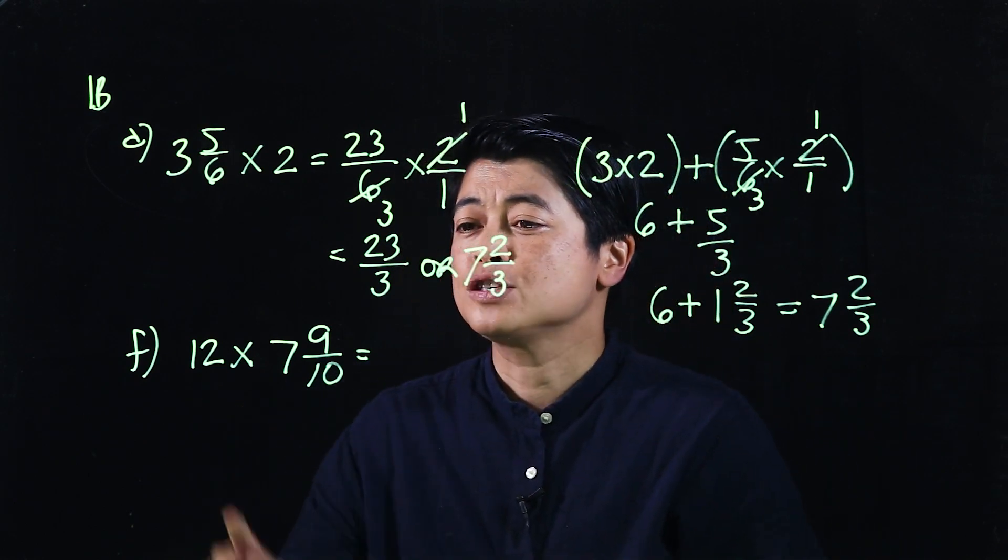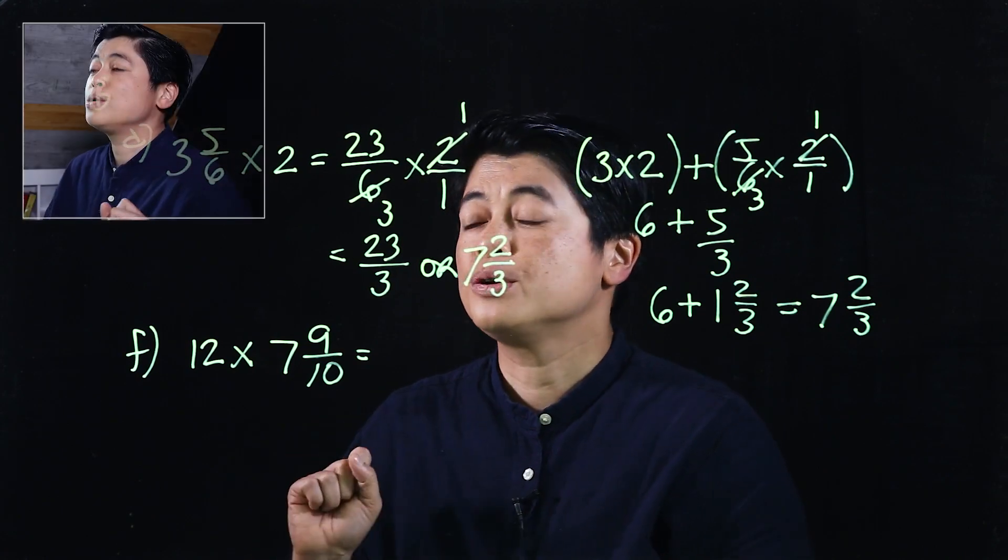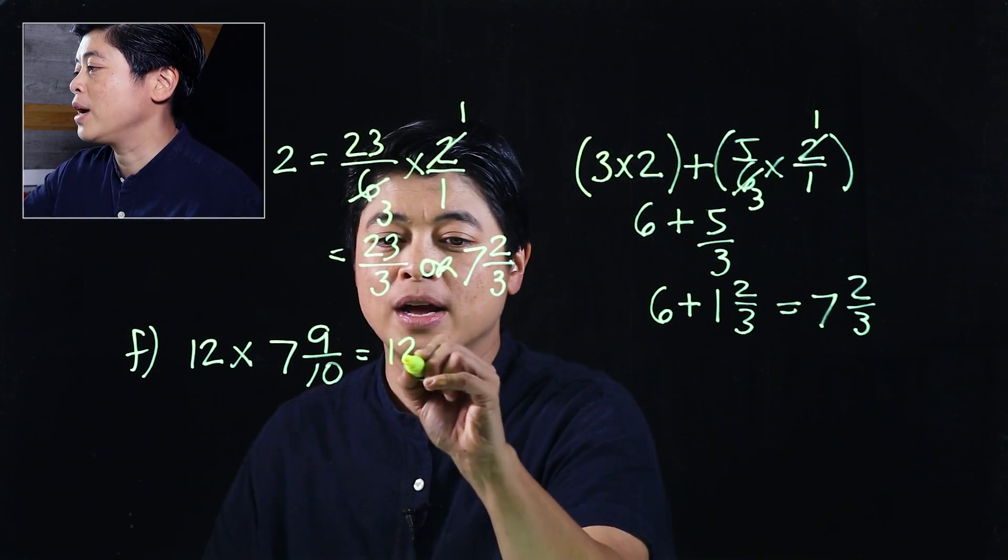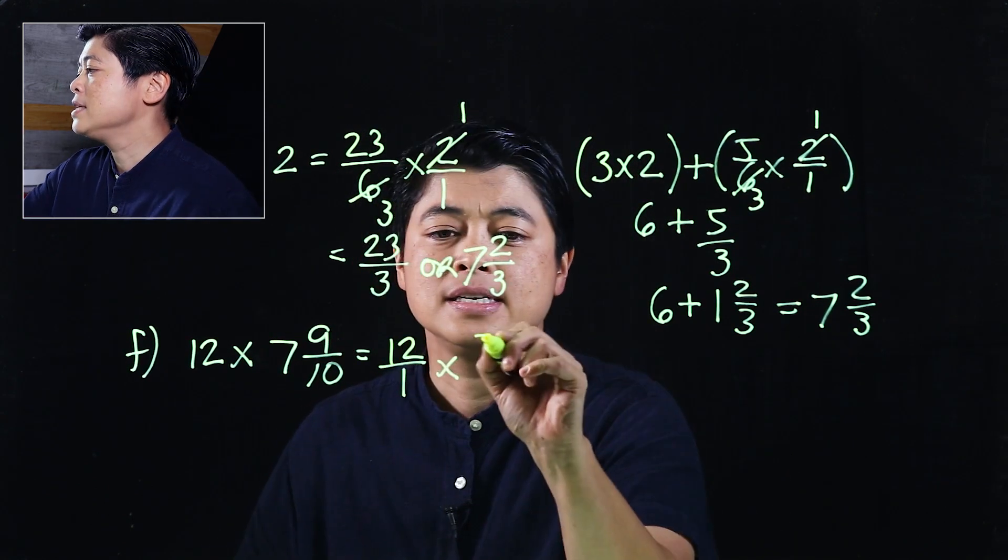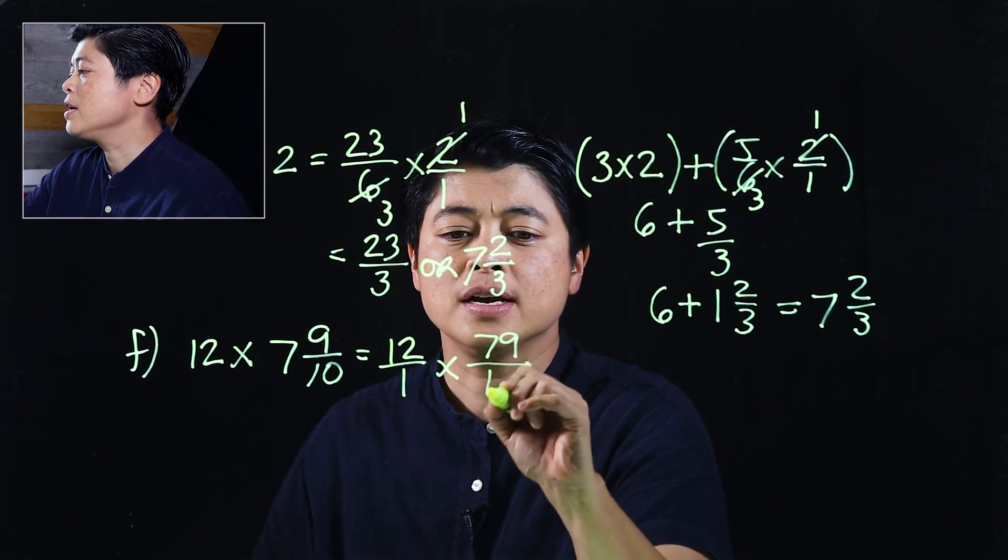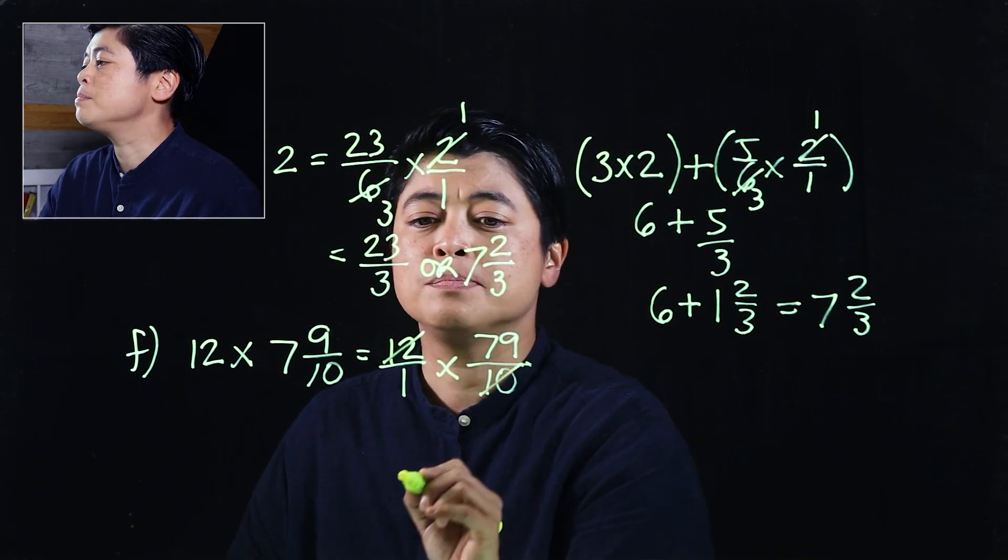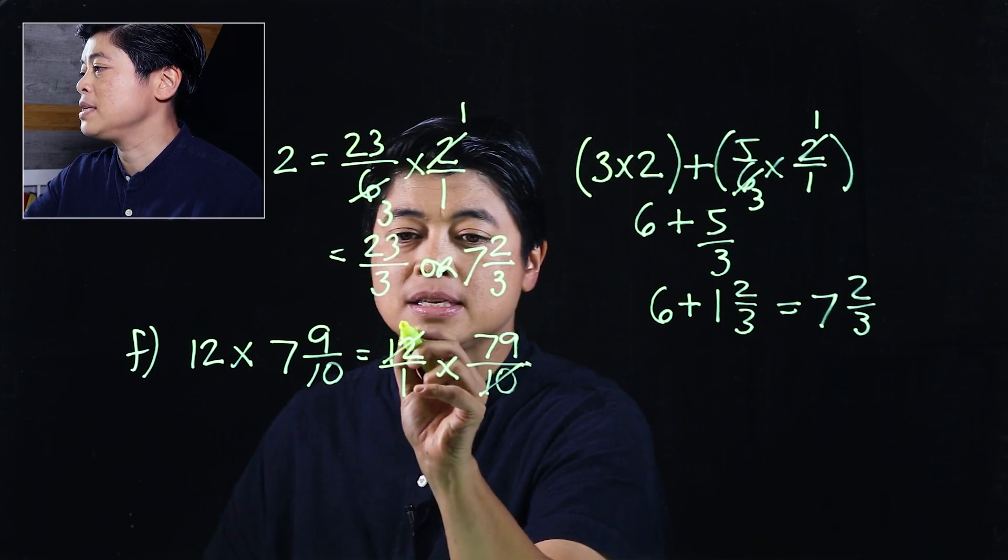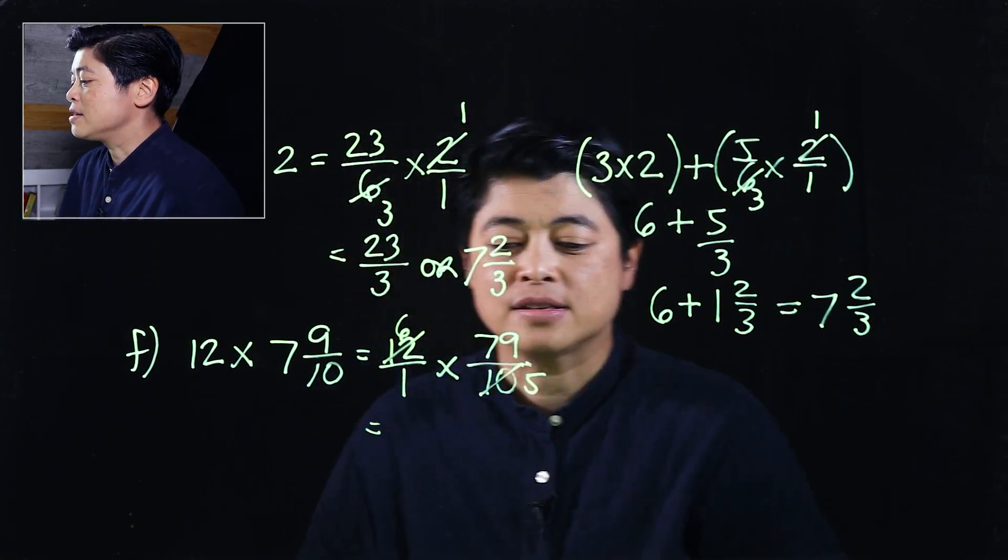If we look at the next problem it says 12 times 7 and 9 tenths. So I will do it the traditional method which is 12 over 1 times this will be 79 over 10. Again we can cancel both of those by 2, so to cancel means to divide. So that means that will be 6 and that will be 5.